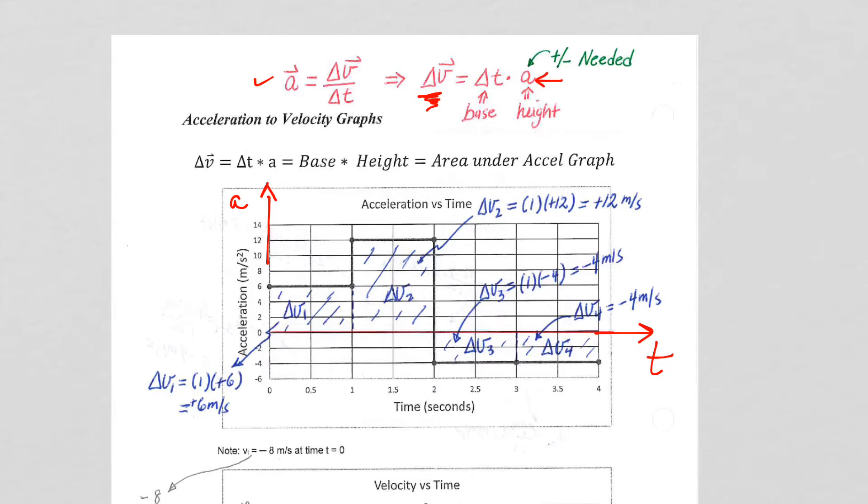So since the graphical representation of acceleration versus time puts acceleration on the y-axis or my height axis, puts delta T on my base axis, height times base equals area. And it is absolutely important, so please make sure you get this down into your notes,